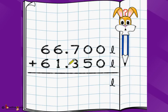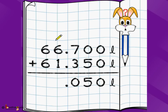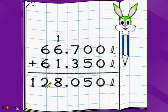Let's take another problem: 66.700 liters plus 61.350 liters. 0 plus 0 is 0, 0 plus 5 is 5, 7 plus 3 is 10 — 0 comes here and 1 carries to its left neighbor, crossing the decimal point — no issues, it always goes to the left. So 1 plus 6 is 7, 7 plus 1 is 8, 6 plus 6 is 12. The answer is 128.050 liters, or 128 liters and 50 milliliters.